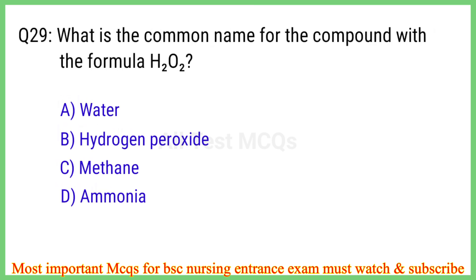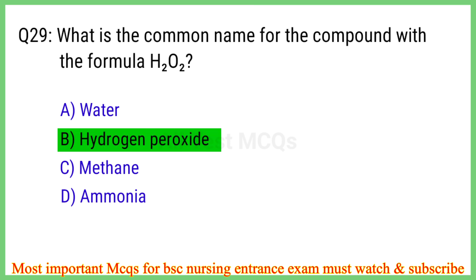Q29. What is the compound with the formula H2O2? The correct answer is option B: Hydrogen peroxide.